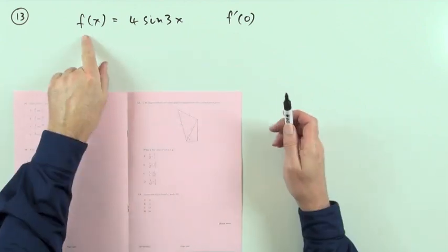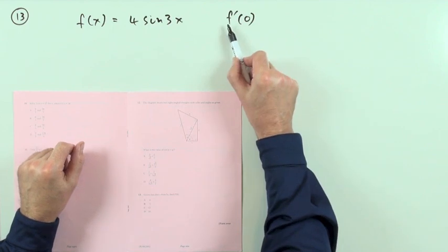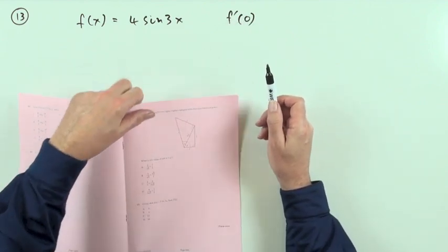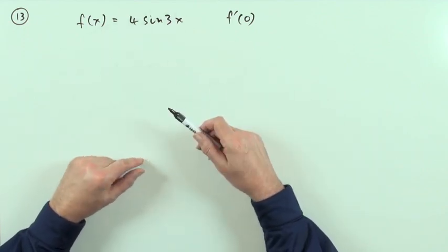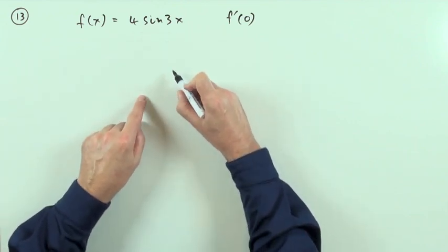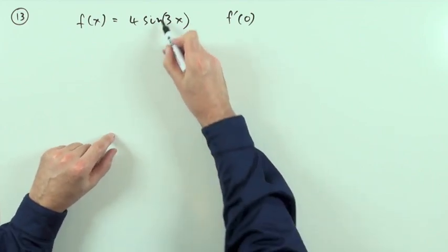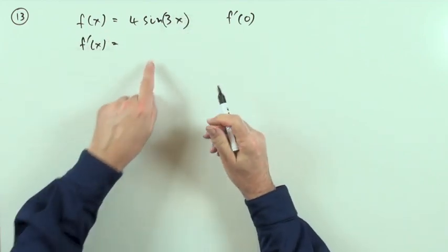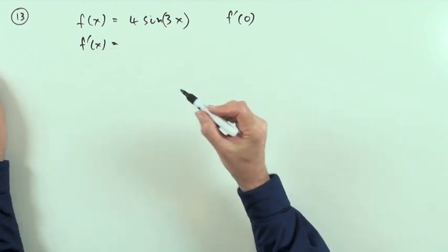Number 13: there's a function here with a trig expression and you've defined the value of the derivative at zero. Don't put zero into x before you differentiate, because you'll just end up with a number and the derivative would be zero. What you've got here isn't just sine of x — it's a function of a function, sine of something else, so you're going to use the chain rule.